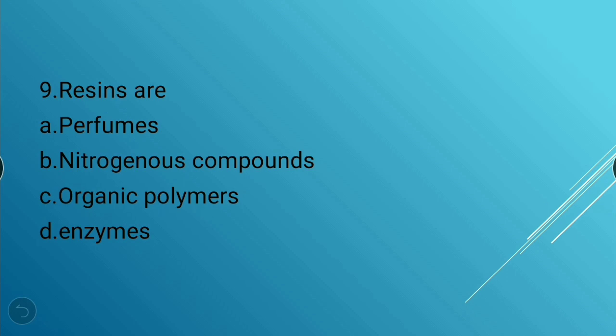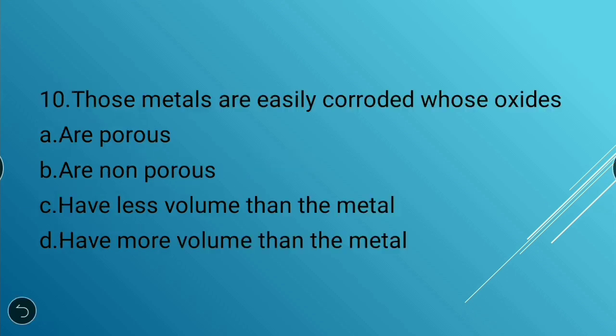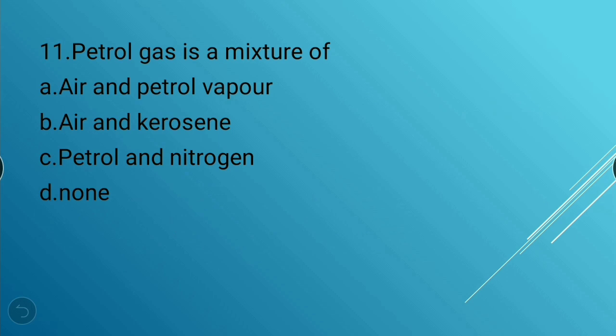Next question: Those metals are easily corroded whose oxides are — porous, non-porous, have less volume than the metal, or have more volume than the metal. The answer is option A — porous. Those metals are easily corroded whose oxides are porous.